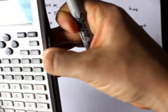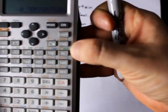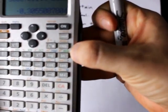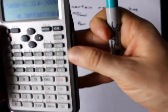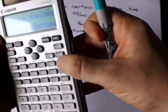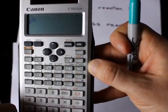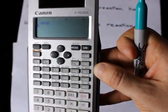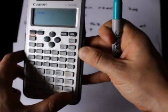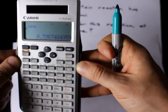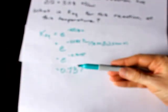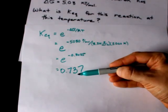On my calculator I have a button for e to the power of. So I'm simply going to do shift ln for e to the power of and then press my answer button, so I reuse the previous answer and don't lose any decimal places. That gives me 0.737 if I round it.